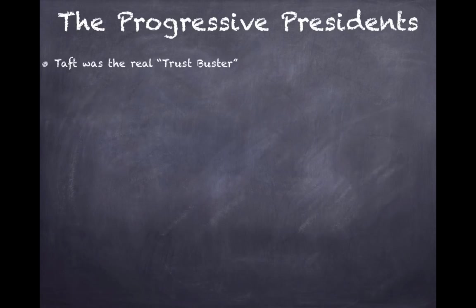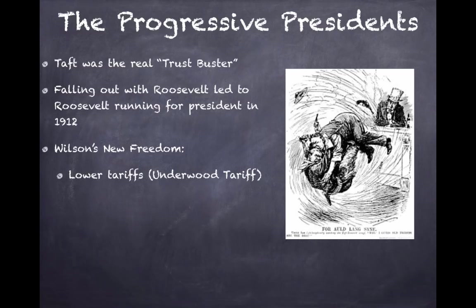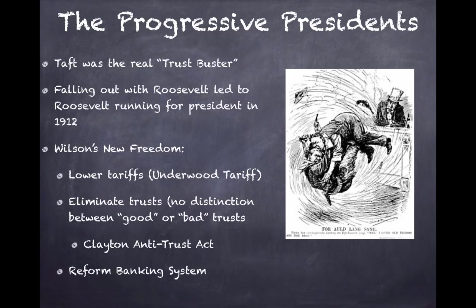Taft was the real trust buster, more so than Roosevelt, but he had a falling out with Roosevelt that led to Roosevelt running for president in 1912. Wilson's New Freedom: he wanted lower tariffs — remember, he was a Democrat, and Democrats want tariff rates to decrease. He wanted to eliminate trusts with no distinction between good or bad trust, unlike Teddy. The Clayton Antitrust Act strengthened the Sherman Antitrust Act and exempted unions. And he wanted to reform the banking system through the Federal Reserve Act.